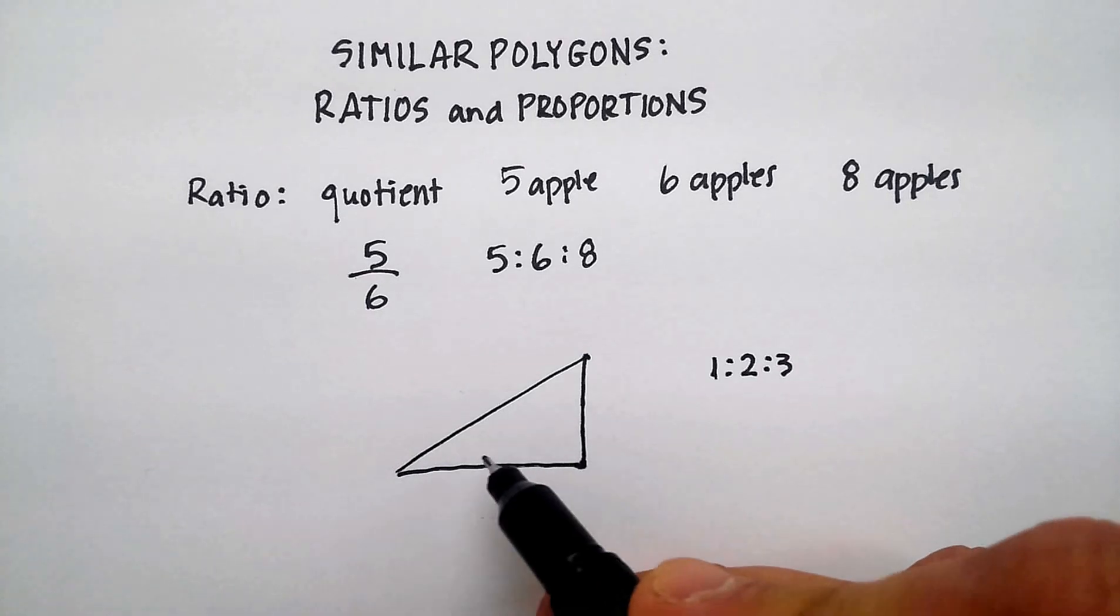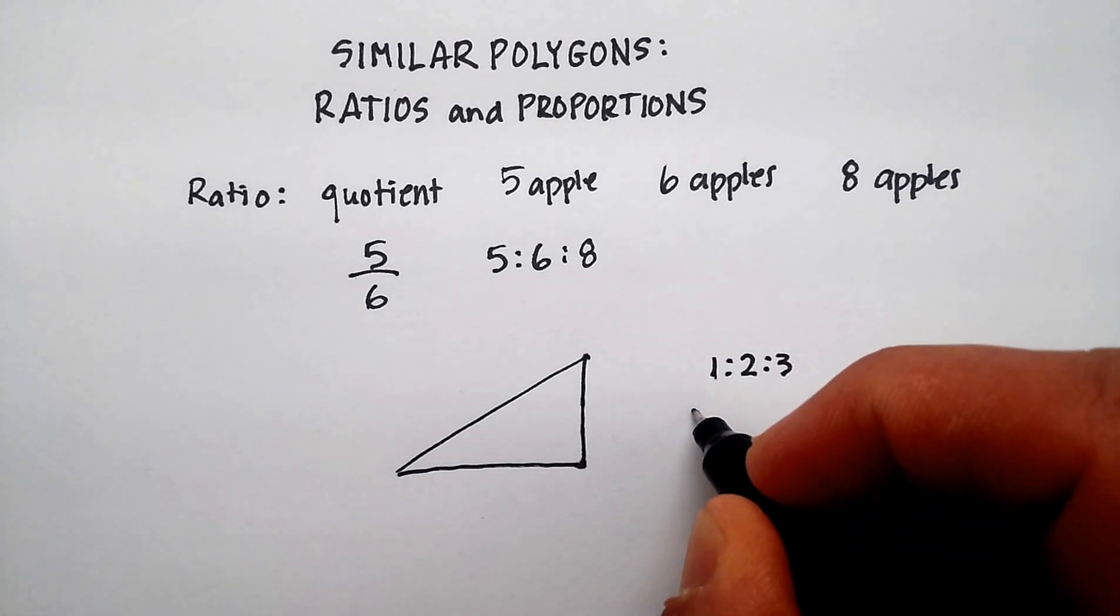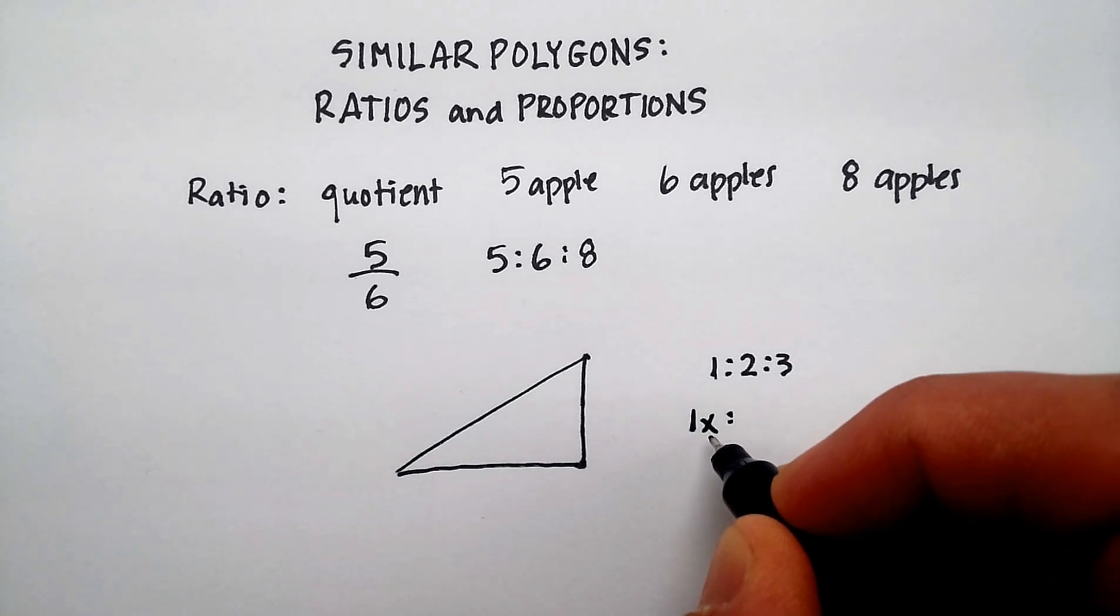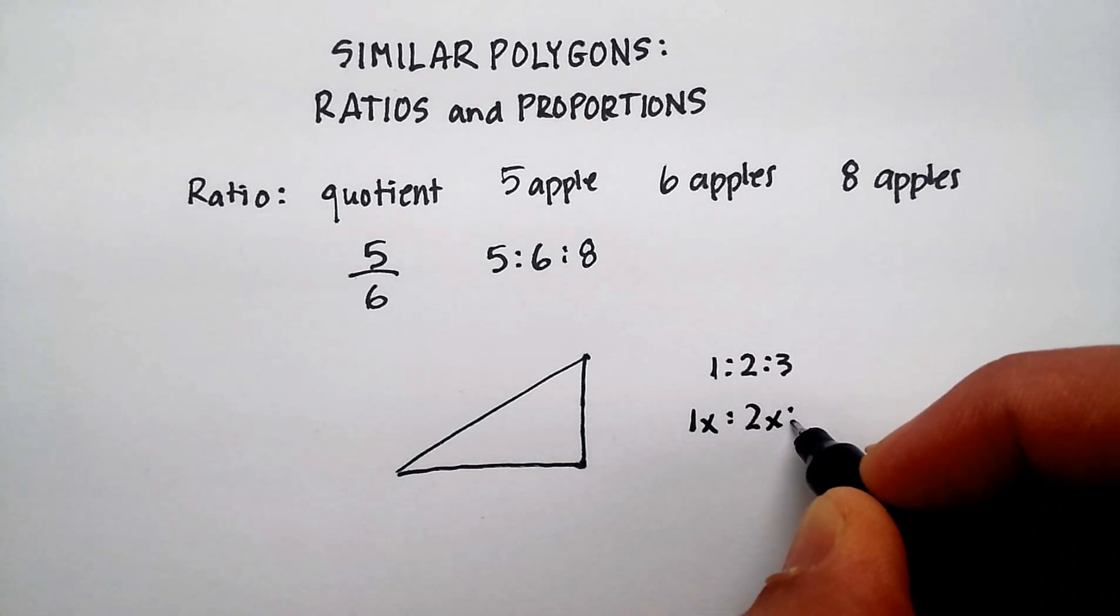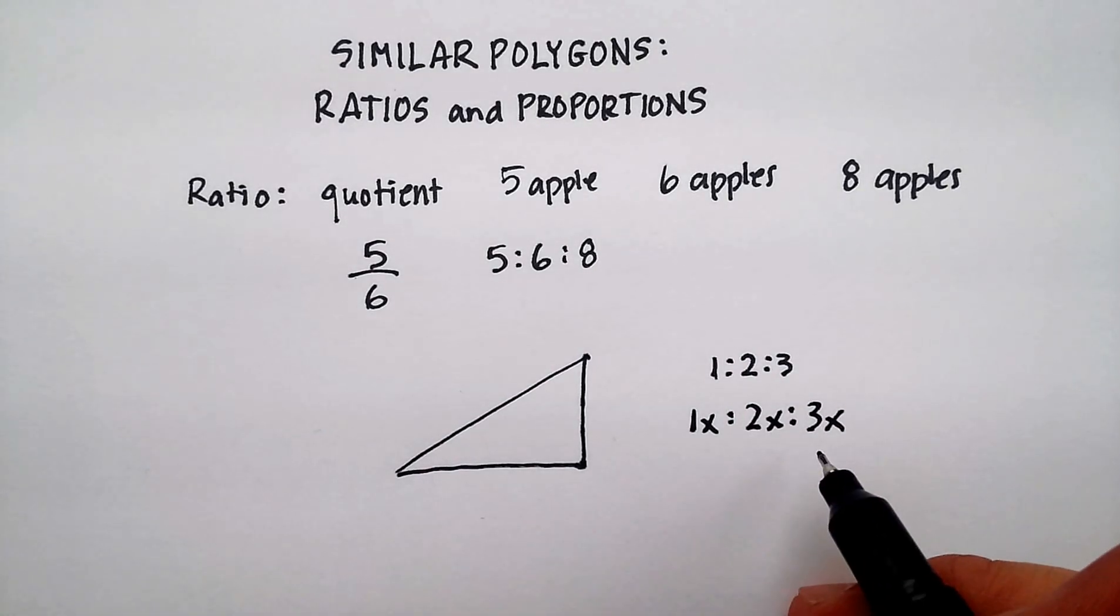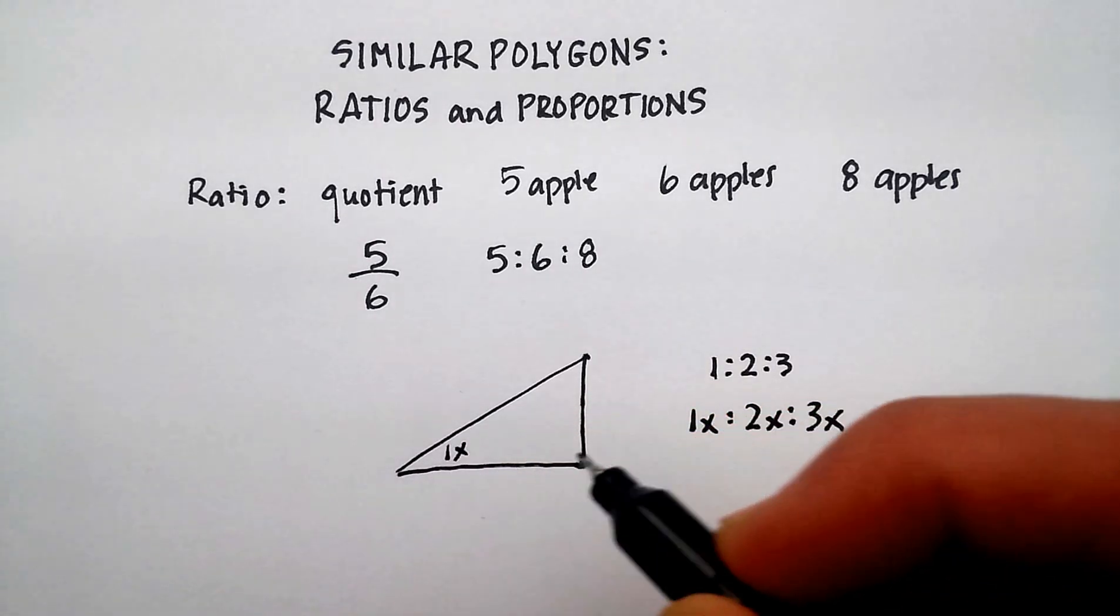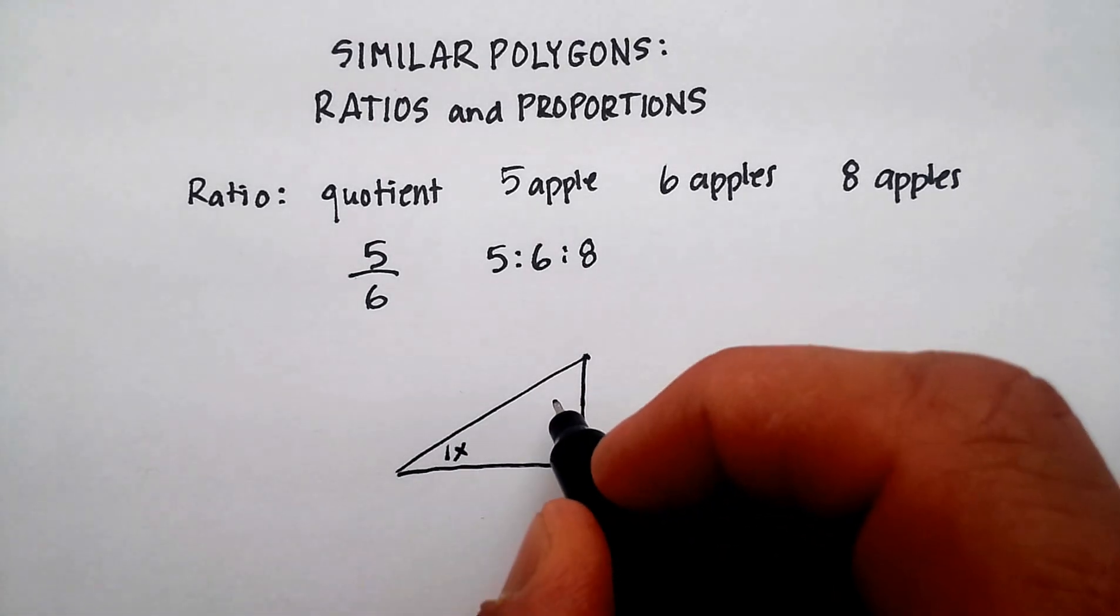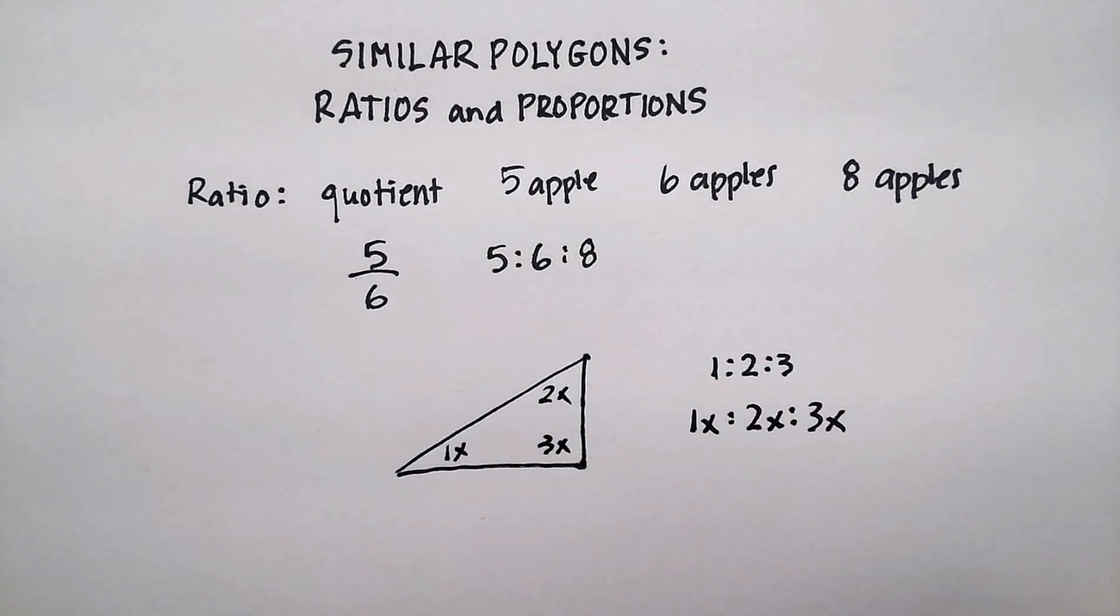If the ratio is one to two to three, and these are all unknown, I could rewrite this as 1x, because remember, x is an unknown, to 2x, to 3x. Now, essentially, what I am saying is that one of these angles, and it really doesn't make any difference which ones you label which, 1x, 2x, 3x.